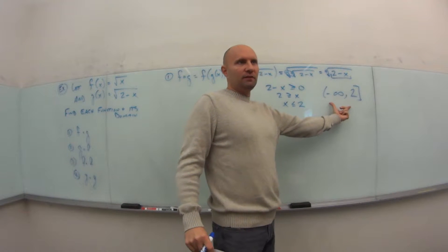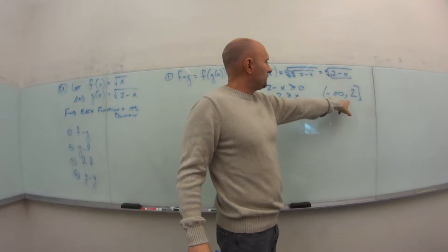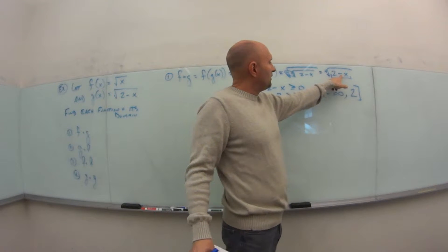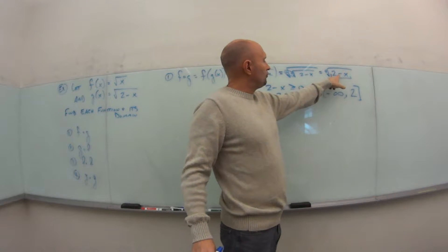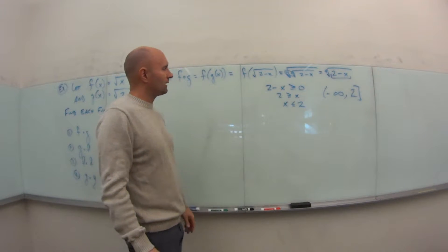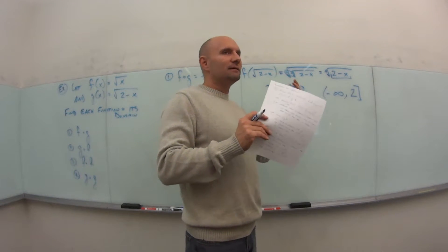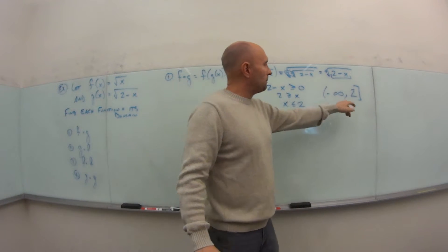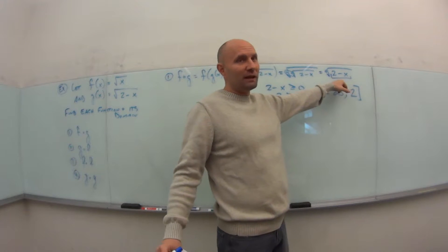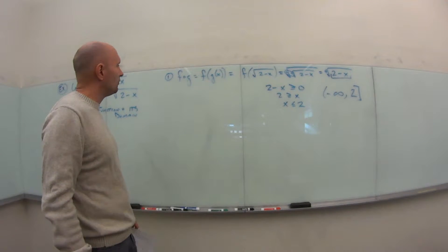You can check by picking a value in the interval. For example, x = 0: 2 − 0 = 2, and the fourth root of 2 is fine. Check the endpoint x = 2: 2 − 2 = 0, and the fourth root of 0 is fine. So we're confident the domain is (−∞, 2].